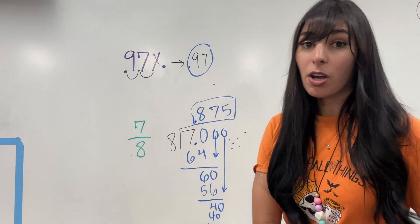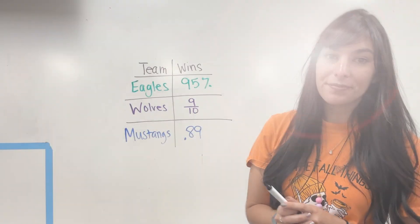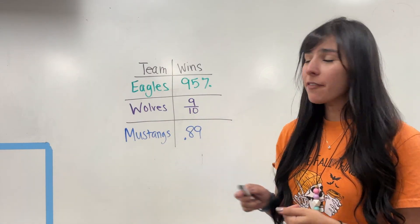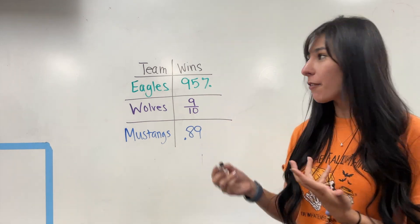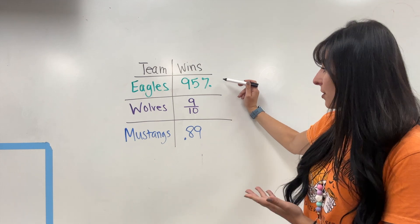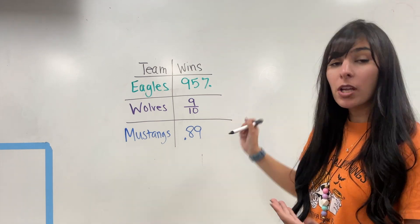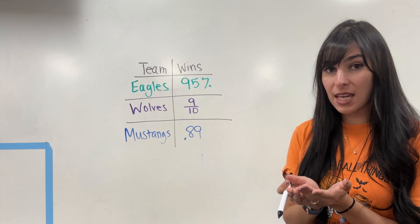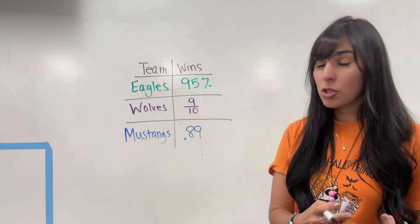So convert them to the decimal, then you can actually compare. Next, I'm going to do a word problem. We're going to figure out which team had the most wins. If you notice, the wins are all written differently — I have a percent, I have a fraction, and I have a decimal. In order to compare these, I have to make them all the same thing: all percents, all fractions, or all decimals.